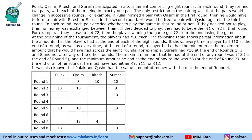Hello everyone, welcome to Aptitude Jab. This set from CAT 2022, slot 3 DILR, says that Pulak, Kasim, Ritesh and Suresh participated in a tournament comprising 8 rounds. In each round, they formed 2 pairs, with each of them being in exactly 1 pair. The only restriction was that the pairs would change in successive rounds.